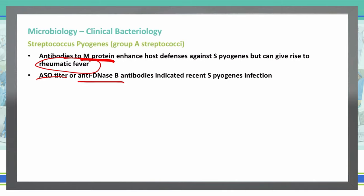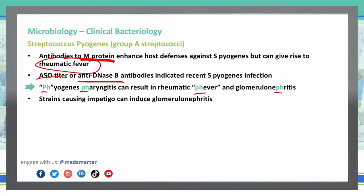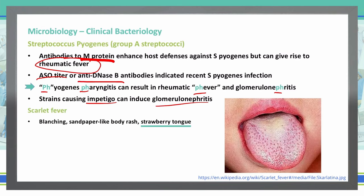A mnemonic to remember clinical signs of pyogenes: 'pyogenes pharyngitis can result in rheumatic fever and glomerulonephritis' — using pH for pharyngitis, fever, and nephritis to remember pyogenes. Impetigo strains, which cause those honey-crusted lesions, can also induce glomerulonephritis. For scarlet fever, look for blanching sandpaper-like body rashes and specifically a strawberry tongue, which you can see in the picture here.